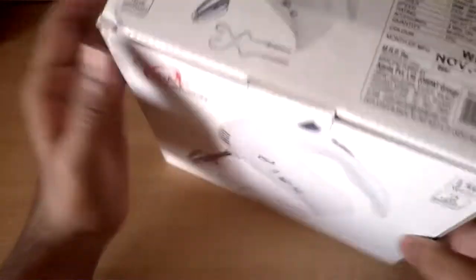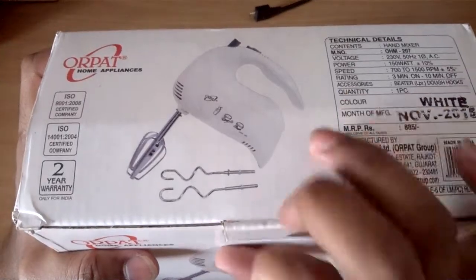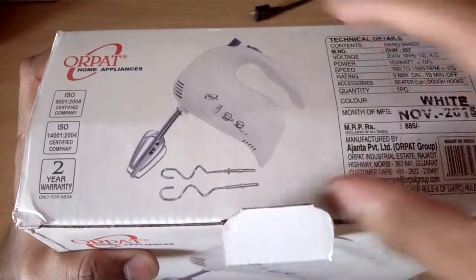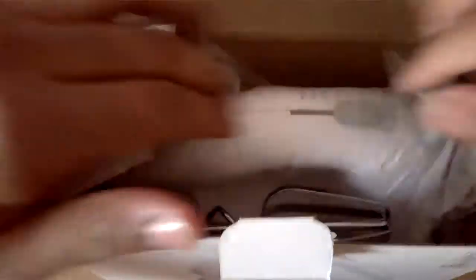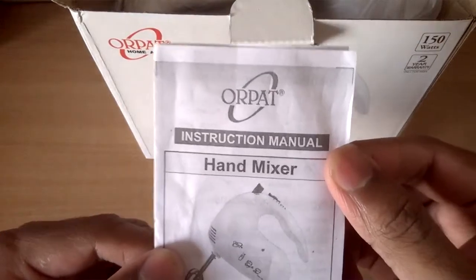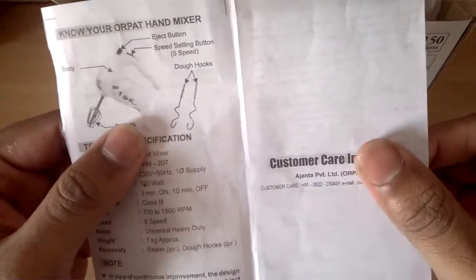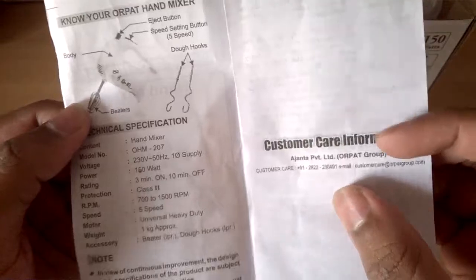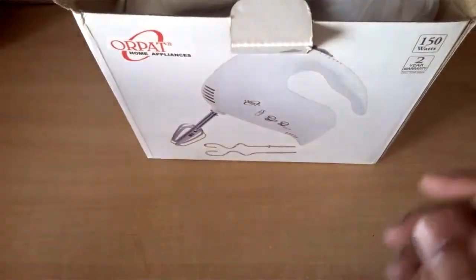Let's open this thing up and see what we get inside the box. First of all inside the box you get the instruction manual for hand mixer and the customer care information. Do read this before using it if you are using it for the first time.